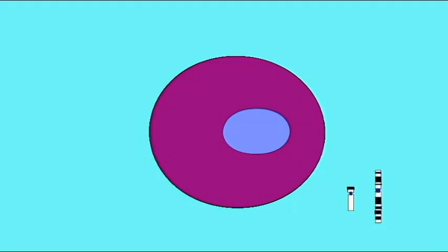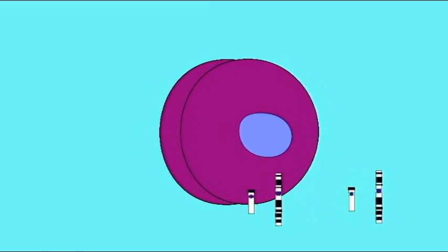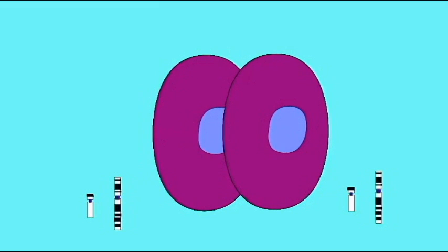If the non-disjunction were to occur later in embryonic development, then even a larger percentage of the embryo's cells would have a normal complement of chromosomes.